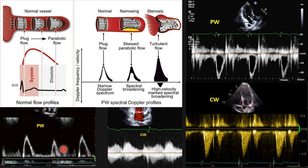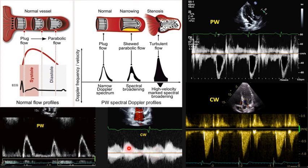It's the same concept at the mitral valve. In pulsed wave Doppler it's clean — it has a spectral window and a very narrow curving spectral profile. But in continuous wave, you can see a full spectral representing different velocities, directions, and so on.